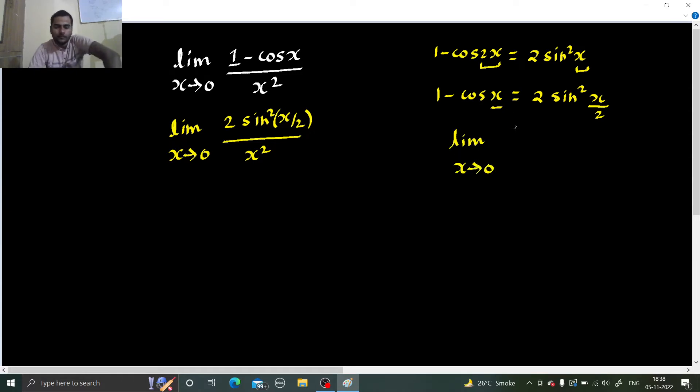Now we know limit x tending to 0, sine mx by mx gives you 1. So if I want to create the same, limit x tending to 0, 2 can move out. This I can write as sine x by 2 divided by x, wait, this whole square I can write.